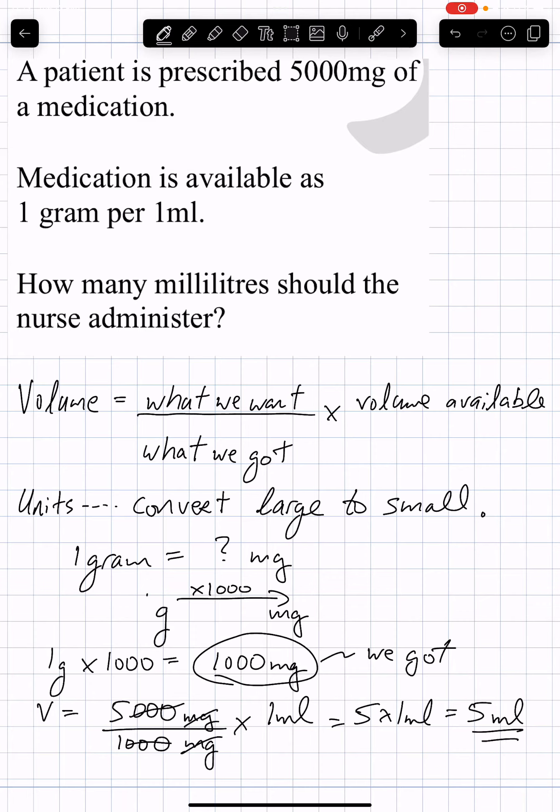Does that answer make sense? It does. If we give them 1 mL, they receive 1 gram or 1,000 mg. If we give them 5 mL, they receive 5 grams, which is equivalent to 5,000 mg. So I'm happy with this answer.